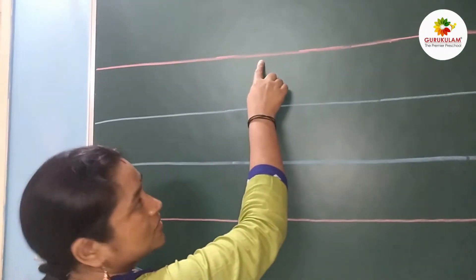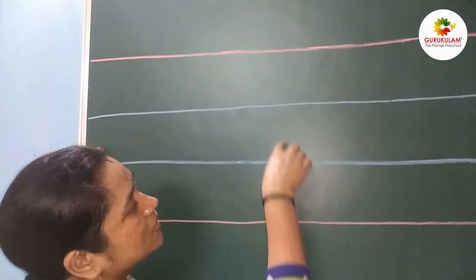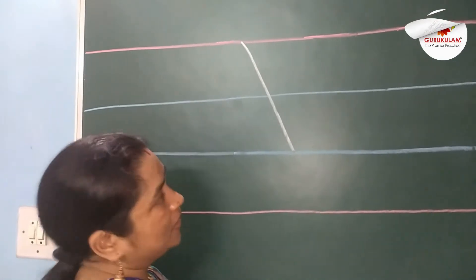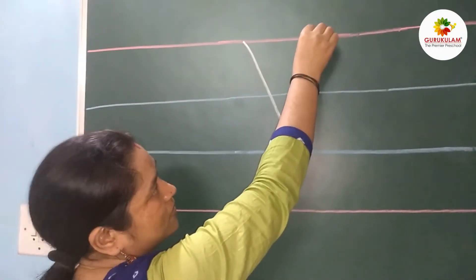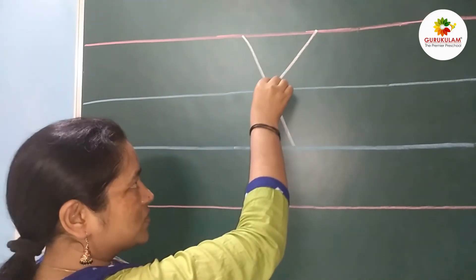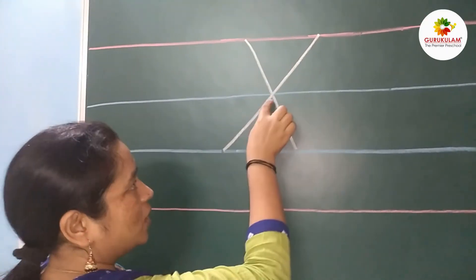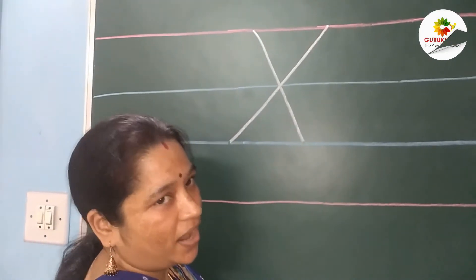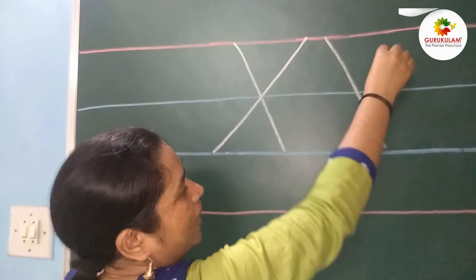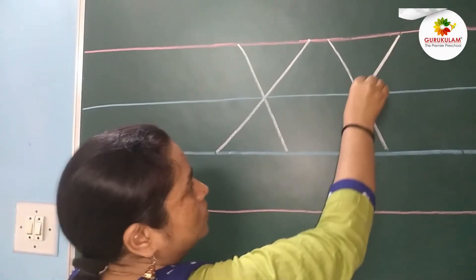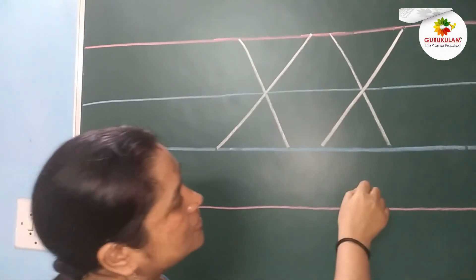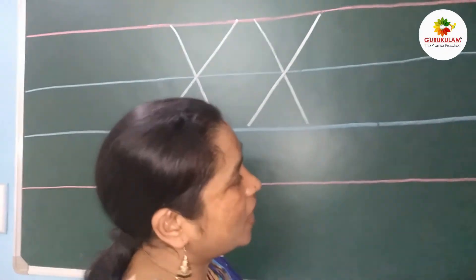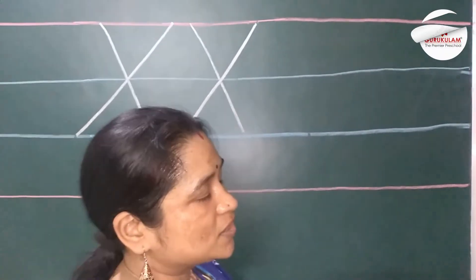See, start from this red line to this blue line and make one slanting line. Then again go up from this red line and make one more slanting line, and it should cross here to this line. This is our capital letter X — slanting line and one more slanting line.